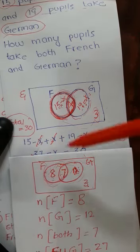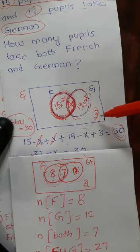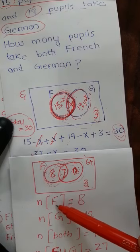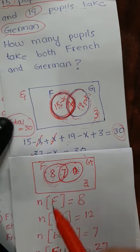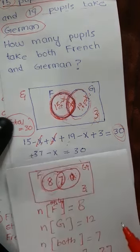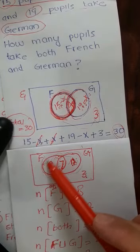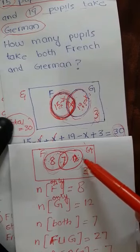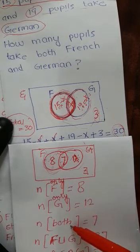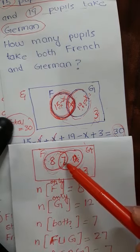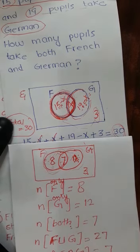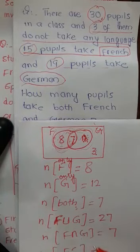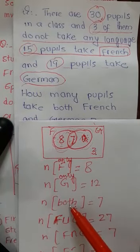Your answer equals 30, which was the total strength of pupils studying languages as well as those who were not. So the answer is correct. The number of students studying only French is 8. The number of students studying only German is 12. The number of students studying both French and German is 7. This is how you solve a word problem related to the Venn diagram.